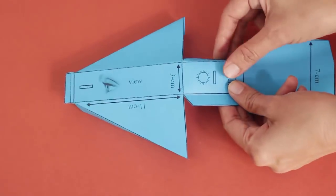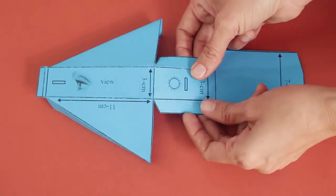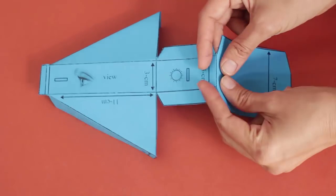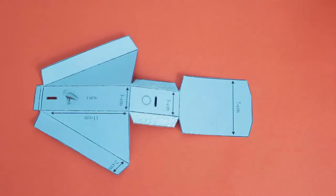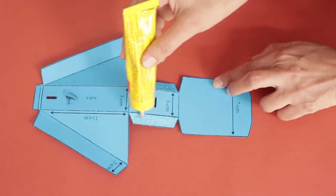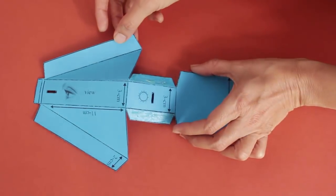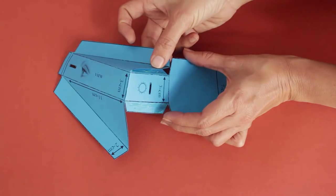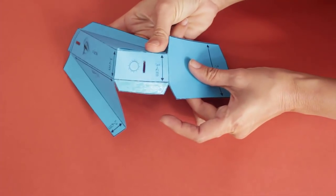Cut two rectangular slits—one for the sunlight to enter and the other to place your eye to view the spectrum. Apply glue on the flaps and stick them to make a triangular box.